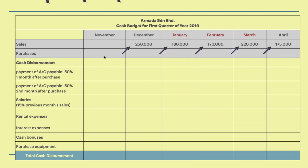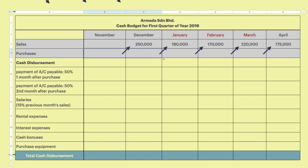Here is the format to answer Step 2 — purchases. It is referred to forward sales, so you calculate and you will get 100,000, 72,000, 60,000, 68,000, 88,000, and 70,000. The highlighted figures are what we need for preparing the cash projection. Payment of accounts payable is 50% one month after purchase, so when you purchase 100,000, you need to pay 50,000 in December.